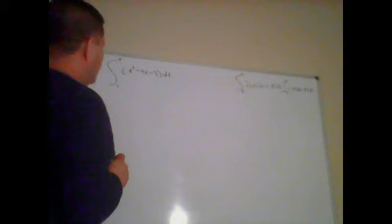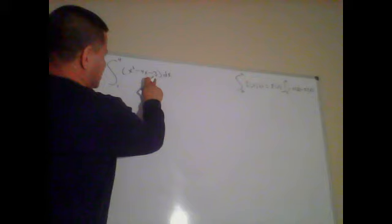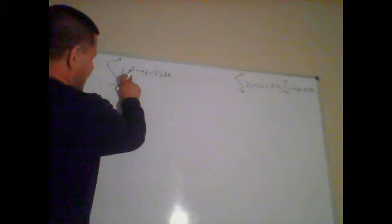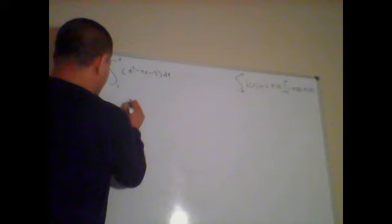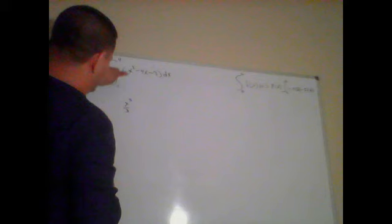So, over here I've got an x squared minus 4x minus 3. I'm going to add 1 to the exponent of x squared. That gave me x cubed over 3. And then, because I divided by a new exponent, right? So, x cubed.